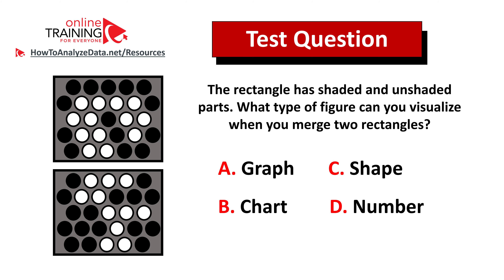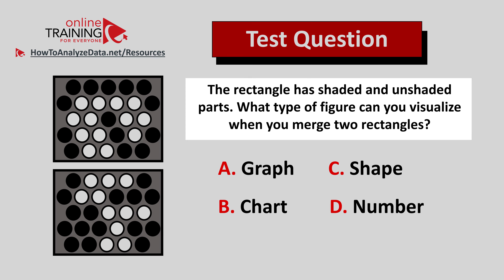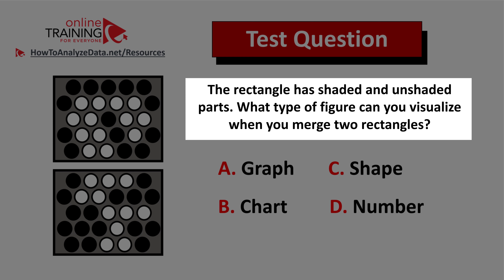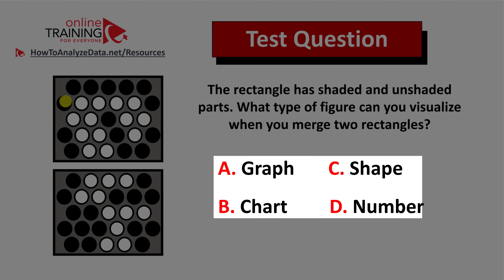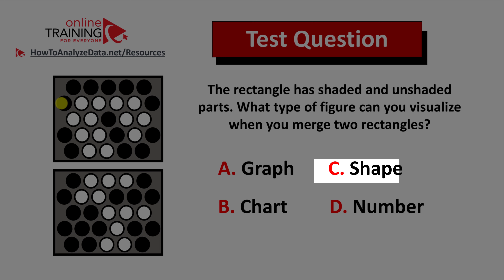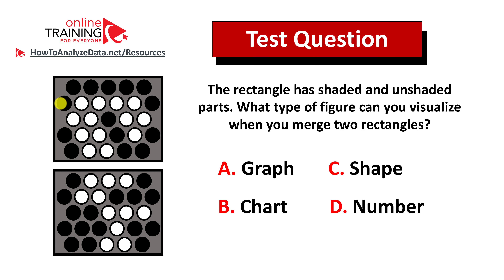This question is very interesting and tricky, and you might frequently see these types of questions on the test. Here's the question: the rectangle has shaded and unshaded parts. What type of figure can you visualize when you merge two rectangles? You have two rectangles on the left with shaded and unshaded parts represented by white circles and black circles, and your four possible choices are: choice A graph, choice B chart, choice C shape, and choice D number.